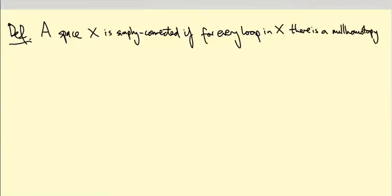So I've done that thing of defining one word that you don't know in terms of some other words you don't know. So what do these words mean? Well the loop is a continuous map.